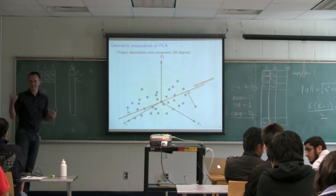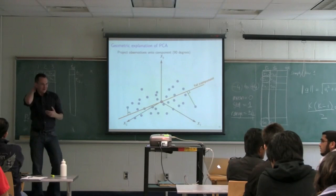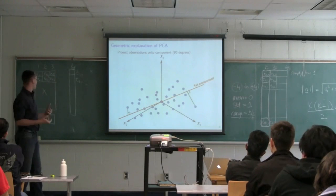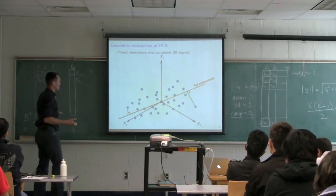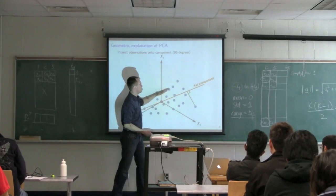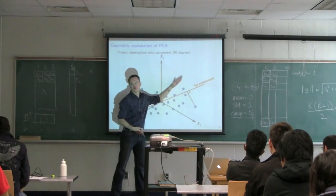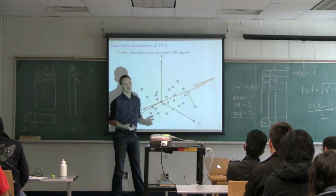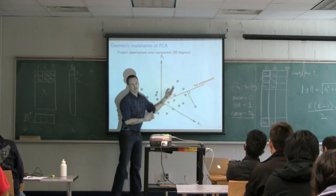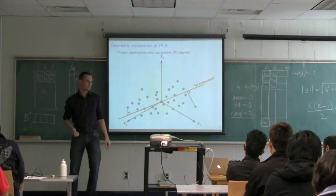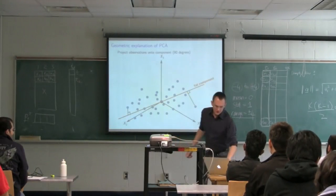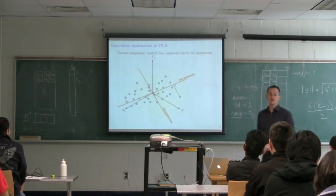We will come back to how P is actually calculated next class. For now, the software finds this direction of greatest variance, and once you have that direction, the T values are calculated as those projection distances. That's the first component.